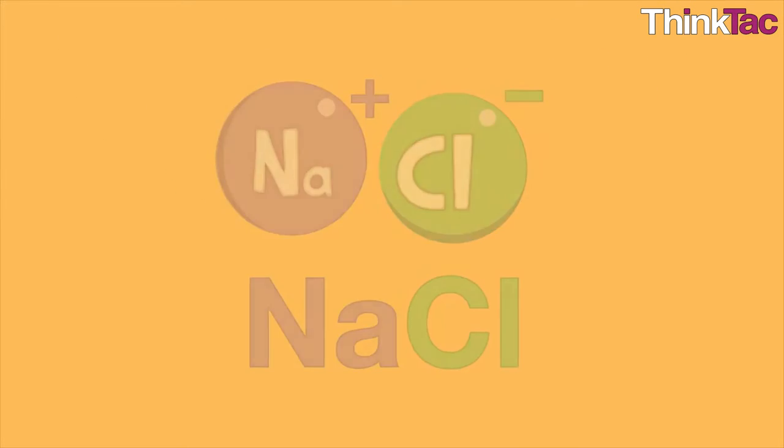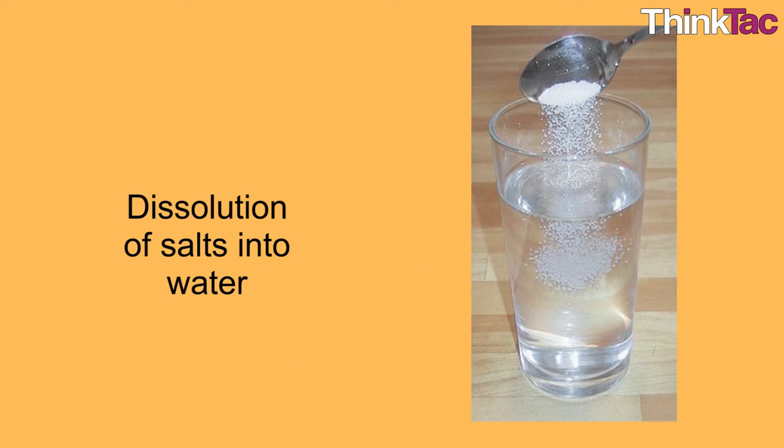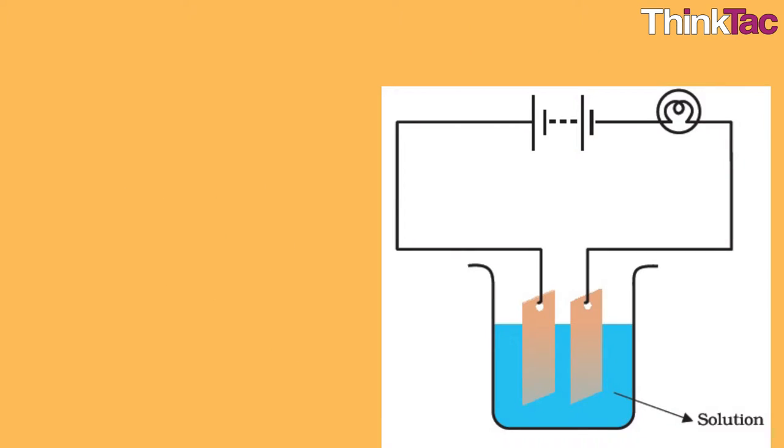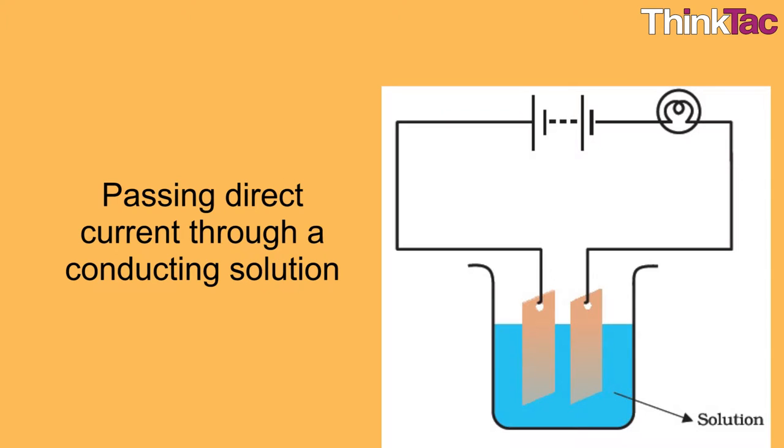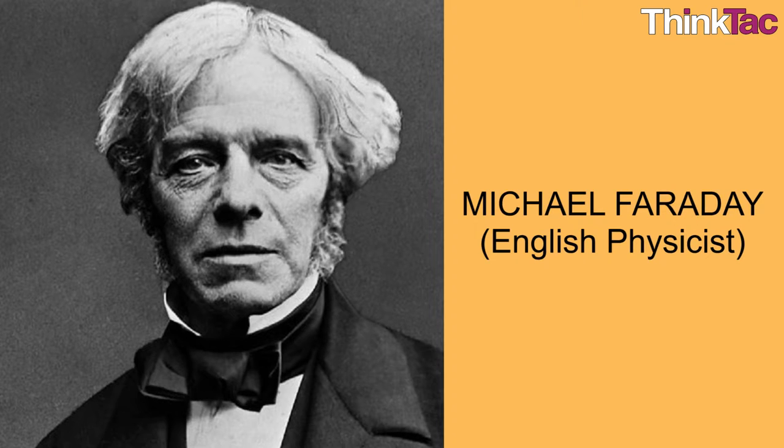Ions can be created by chemical means, like dissolution of salts into water, or by physical means, for example by passing direct current through a conducting solution. The term ion was coined by the great English physicist Michael Faraday in the year 1834.